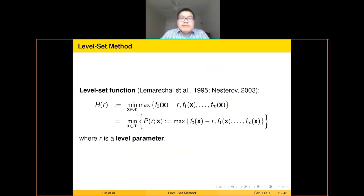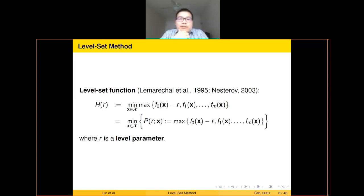The method I use to solve the constraint problem is called the level set method. It is not a new method — people studied it as early as 1995 — but I became more interested in it because of its nice geometric interpretation. You can also achieve the same complexity as the best results in literature with this approach. So I revisit and try to revive this method.